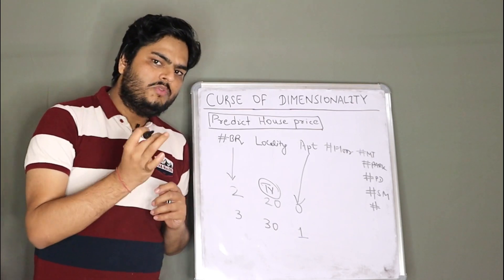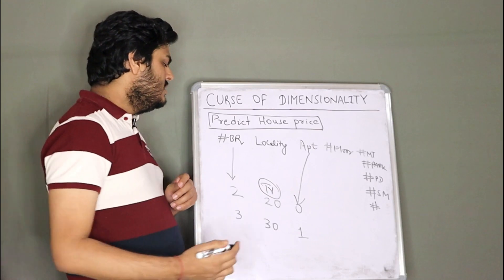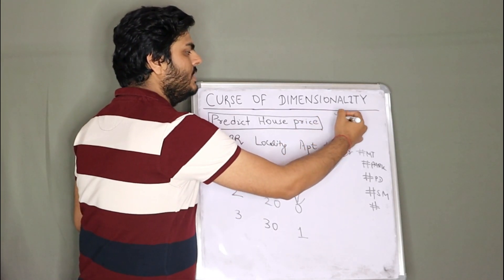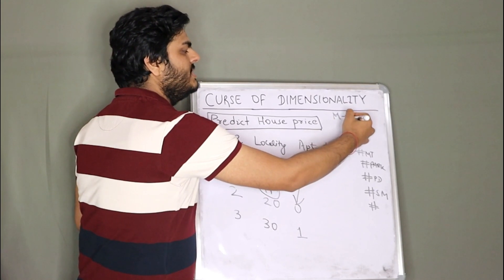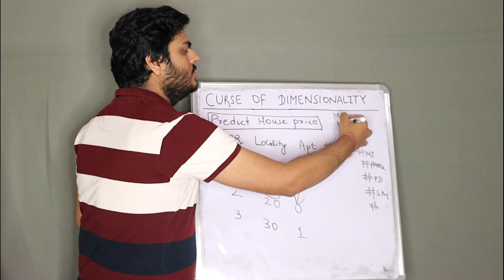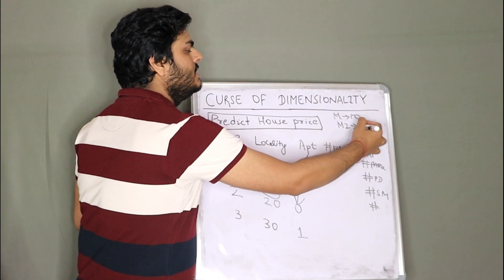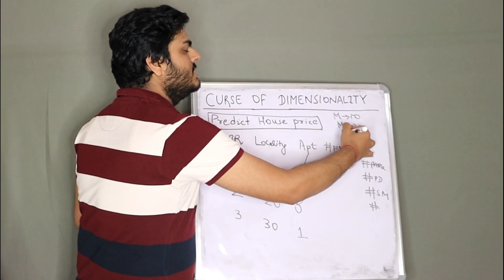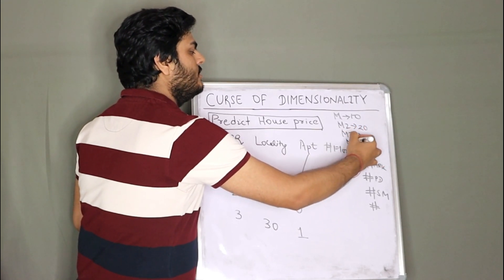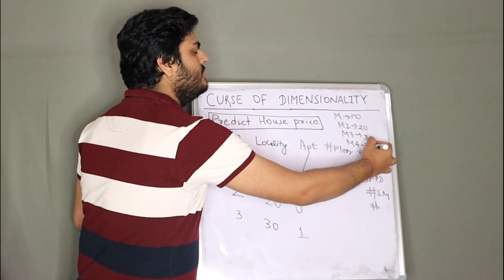How do you explain this in interview? Or how do you explain it to someone? Suppose there is a model one. Model one is having how many features? 10 features. There is a model two. Model two is having how many features? 20 features. Model three. Model three is having how many features? 30 features. Model four. How many features? 40 features?